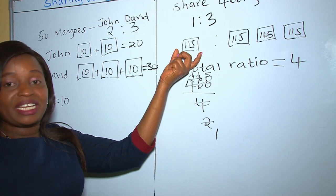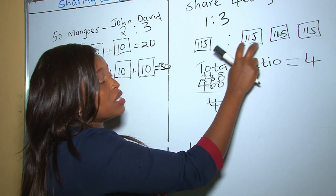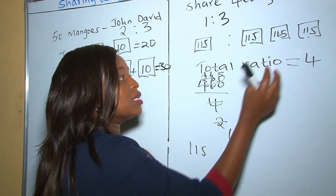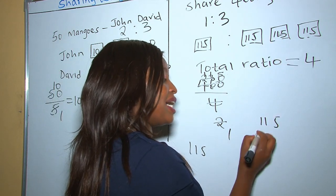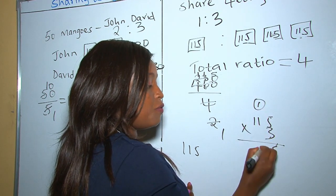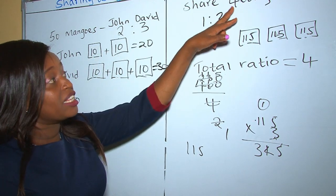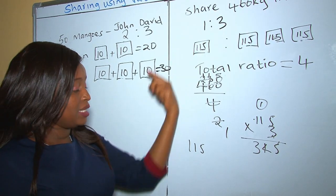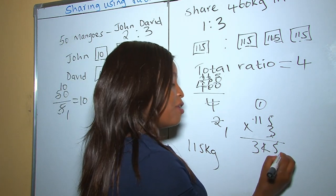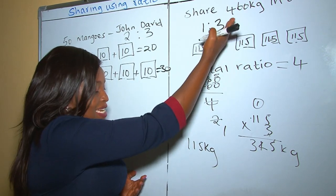According to the ratio, the first part receives one portion of 115 kilograms. The other part receives three portions, so we multiply 115 by 3, which equals 345 kilograms. Therefore the first part gets 115 kg and the other part gets 345 kg. When we add these together we get back to 460 kilograms.